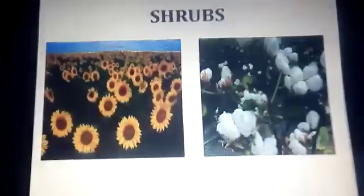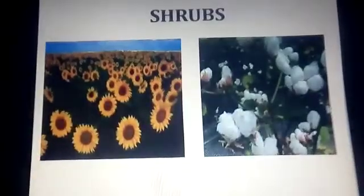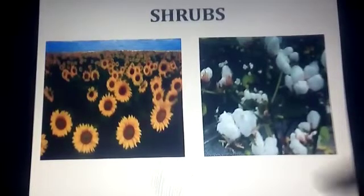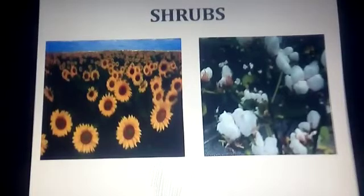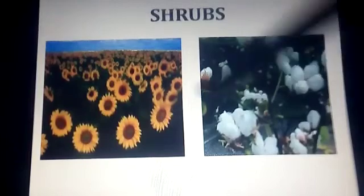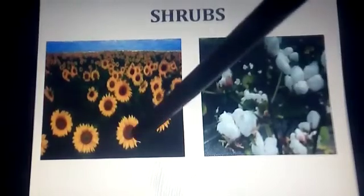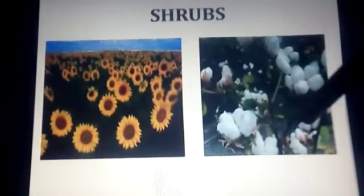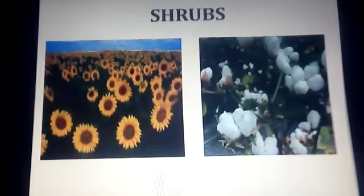Shrub — what does shrub mean? It is a plant with many branches growing from the base. The second type is shrub. What is this flower? Sunflower. What is this plant? Cotton plant. These are examples of shrub plants.